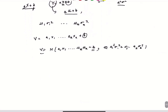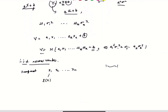Moving on to IID normal variables. If we have a bunch of measurements of the same condition — say the temperature over one hour — we take measurements x1, x2, ..., xn. They are all measuring the same thing, so they are all independent of each other. Each has an expected value, and since they are all measuring the same thing, they are all going to be mu.